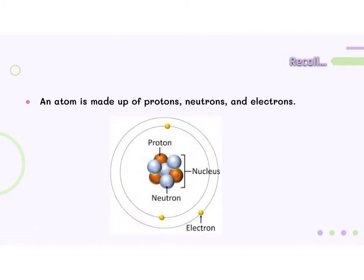If you recall from lesson 101, an atom is made up of protons, neutrons, and electrons. The protons and neutrons are in the nucleus of the atom. The electrons are in the electron cloud around the nucleus.